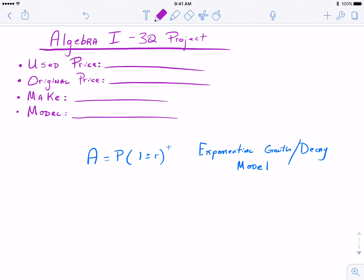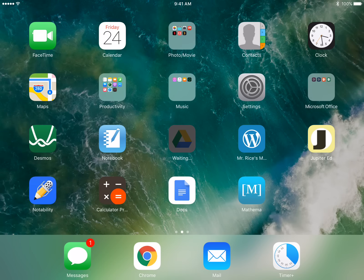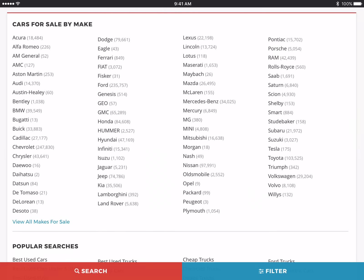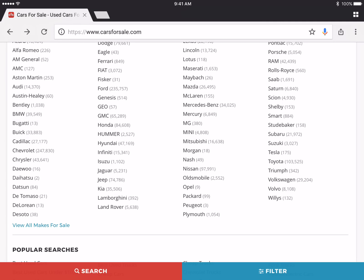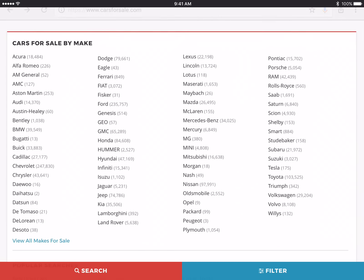So the first thing that I'm going to do which would be the same thing that you guys would do first is actually decide on what car you're going to be investigating for this project. So I'm going to go on carsforsale.com. You get this little drop-down of all the different makes of the cars that are available.